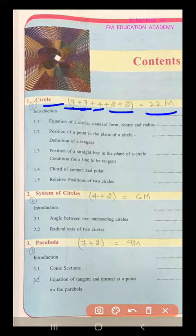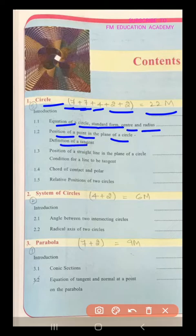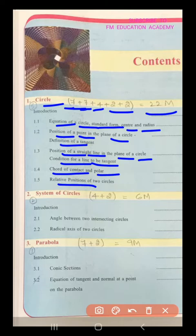The index is as follows. Chapters: equation of a circle, standard form, center and radius, position of a point in the plane of a circle, definition of a tangent, position of a straight line in the plane of a circle, condition for a line to be a tangent, chord of contact and polar, relative positions of two circles.